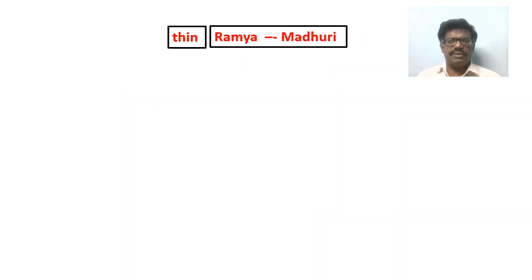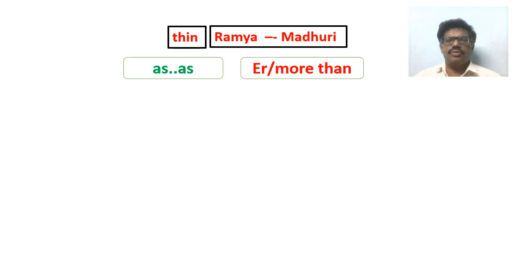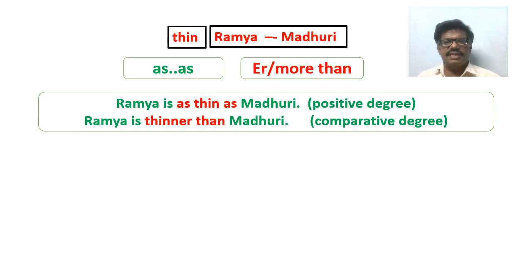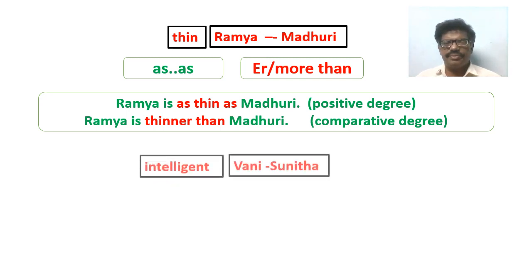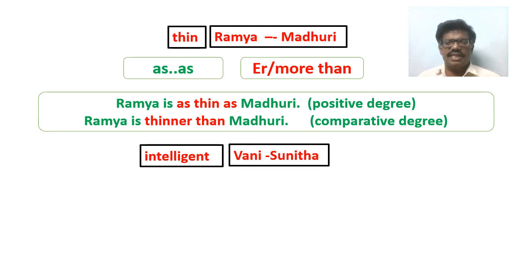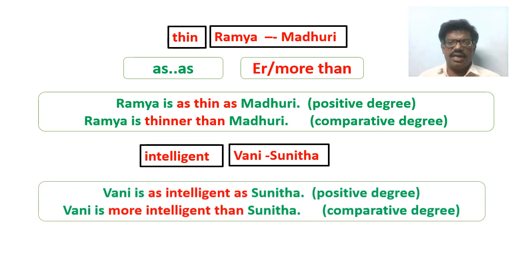Here is one more question. The adjective 'thin' is used to compare two units: Ramya and Madhuri. The expressions we use are 'as...as' for positive degree and 'than' or 'more than' for comparative degree. 'Ramya is as thin as Madhuri' — positive degree. 'Ramya is thinner than Madhuri' — comparative degree. Similarly, the adjective 'intelligent' is used to compare two units: Vani and Sunita. 'Vani is as intelligent as Sunita' — positive degree. 'Vani is more intelligent than Sunita' — comparative degree.